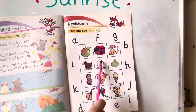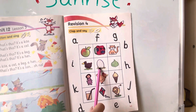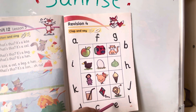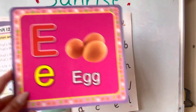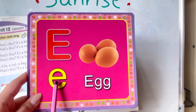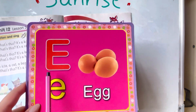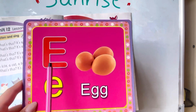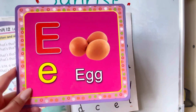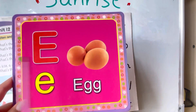And here we have an egg. Egg starts with the letter E. Look at letter E. Can you say E egg? Here we have uppercase E and here we have lowercase e. E egg.